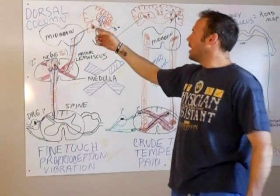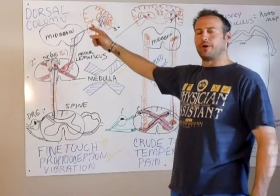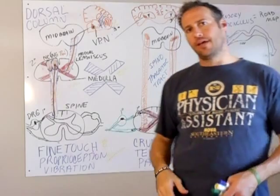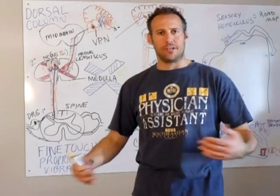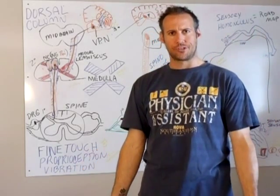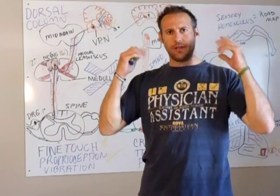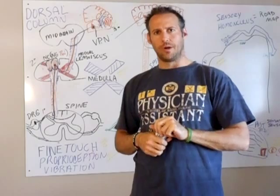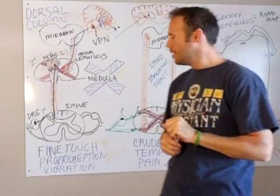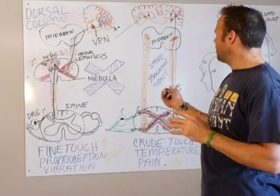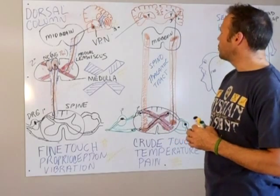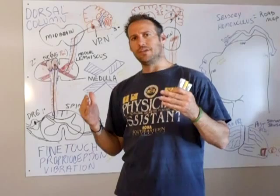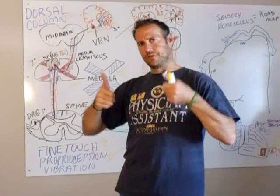We're going to talk about the ascending tracts of both the dorsal column and the spinothalamic tract. The big picture is we need to get sensation from the lower extremities up to the brain to be interpreted by our cerebral cortex to understand what's going on in our conscious world. The big thing to understand between both of these is essentially where these signals cross to get up to the brain.